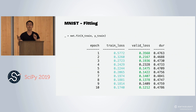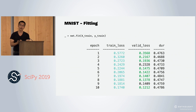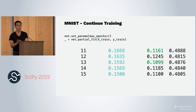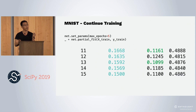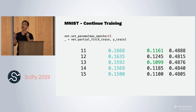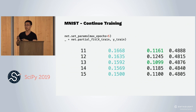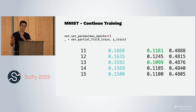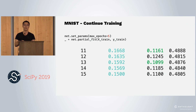Let's say you want to continue training. You can call set_params to update the number of epochs — in this case, I want to continue for five more epochs. Then we call partial_fit, because we want to continue training the neural net, and it trains for five more epochs recording the same metrics.